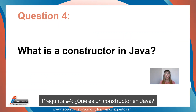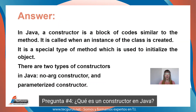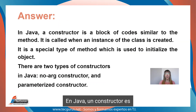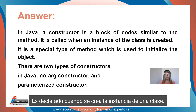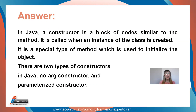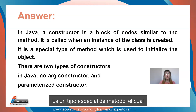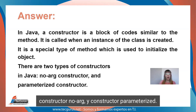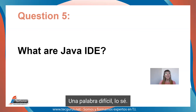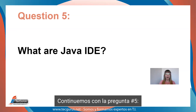Question four. What is a constructor in Java? In Java, a constructor is a block of code similar to a method. It is called when an instance of the class is created. It is a special type of method which is used to initialize the object. There are two types of constructors in Java: no-arg constructor and parameterized constructor. A difficult word, I know.